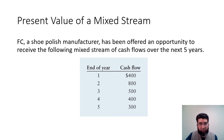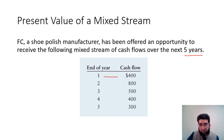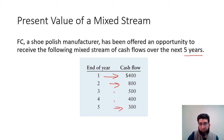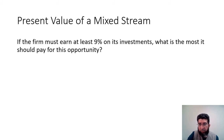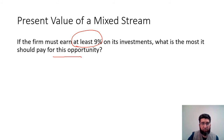Now let's look at the present value of a mixed stream. FC, a shoe polish manufacturer, has been offered an opportunity to receive the following mixed stream of cash flows over five years. At the end of year one FC will receive $400; at the end of year two, $800; then $300; and so on until year five when they receive $300. If the firm must earn at least nine percent on its investment, what is the most it should pay for this opportunity? We draw the timeline to see how it works.